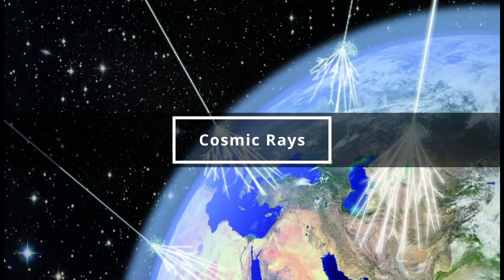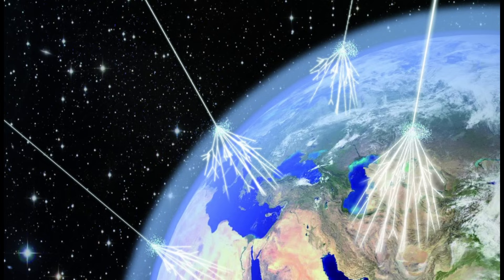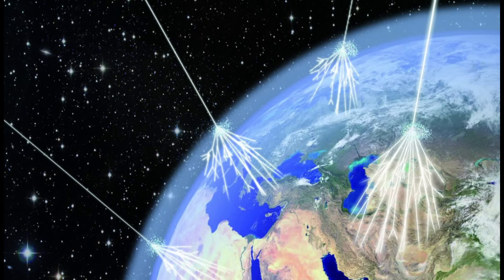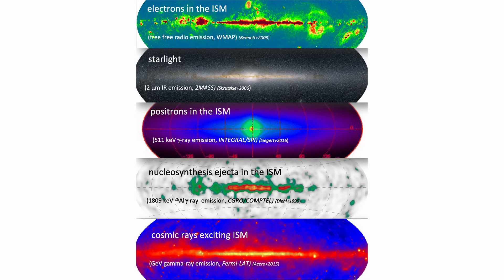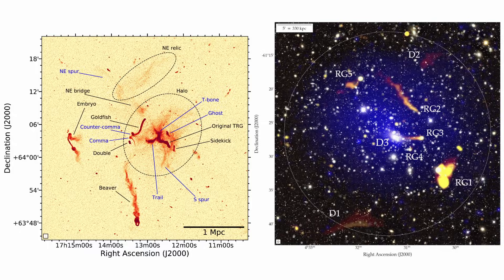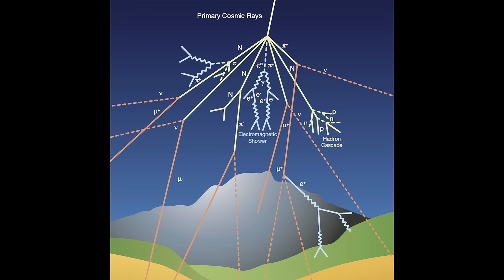Cosmic rays are high-energy particles hurtling through space at velocities approaching the speed of light. They emanate from various sources including the Sun, our own Milky Way galaxy and even galaxies located at vast distances.